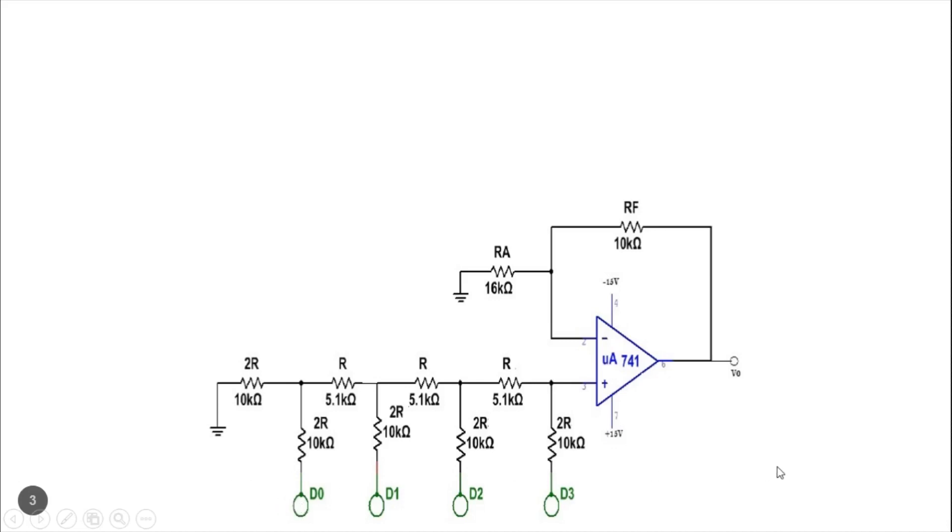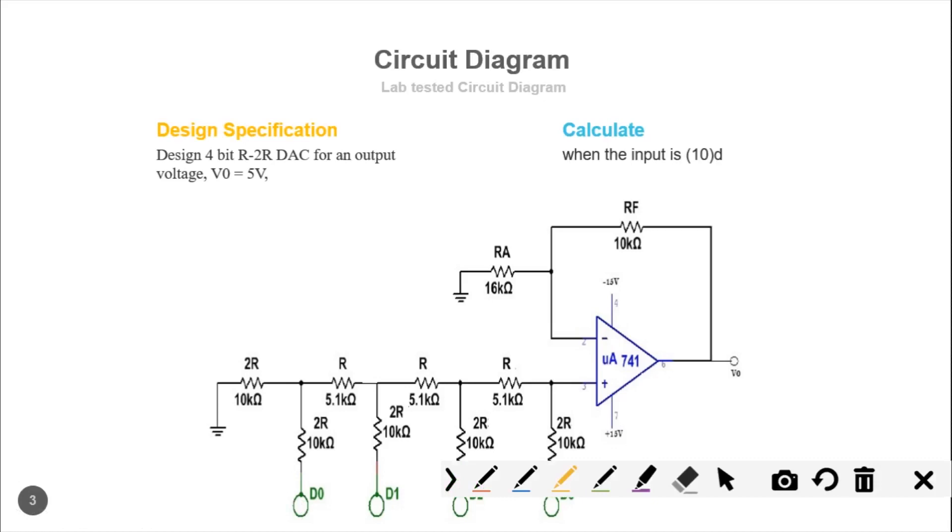Let's calculate the output when given an input of 10 in decimal. First, we need to convert this to binary form, which is 1010. For this 1010, take from MSB to LSB: this is D3, D2, D1, and D0. So D3 is 1, D2 is 0, D1 is 1, and D0 is 0.